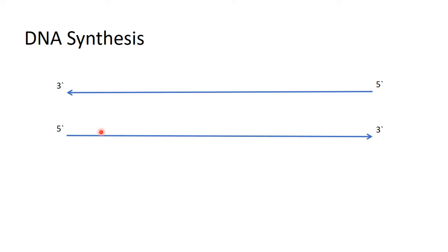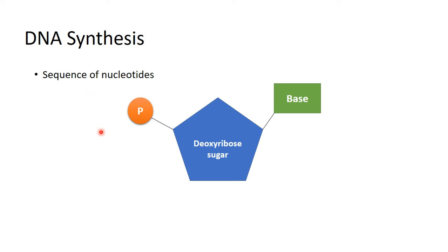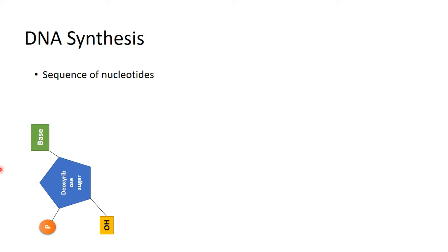Here is how DNA elongation takes place. Here is a nucleotide — DNA is a chain of nucleotides. A nucleotide consists of a deoxyribose sugar, a phosphate group, and a nitrogen base. When we add a nucleotide, we get a hydroxyl group from the deoxyribose sugar, and this hydroxyl group is exactly what is needed to add the next nucleotide.